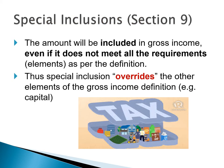As mentioned already, Special Inclusions is contained in Section 9 of the Income Tax Act. Special Inclusions are amounts that will be included in gross income, even if they do not meet all the requirements. When we talk about the requirements, we are talking about the gross income definition requirements. So you will see that for Special Inclusions, some of the requirements might not be present in terms of gross income, but these amounts will still be included.